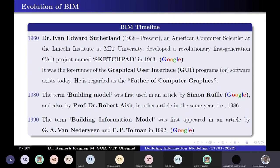The term 'building model' was first used by Simon Ripper. I've provided a link — you can take a look at that article. Independently, another researcher called Robert H. also used the term 'building model.' That was around 1986, a time when personal computers were being developed and released to the public. The term 'building model' represents a computerized model of the building. Then, the first use of 'building information modeling' was during 1992 by Nederveen and Tolman in the journal Automation in Construction — they were the first to coin the term 'building information model.'